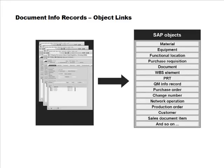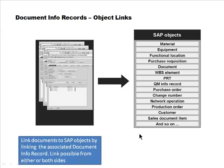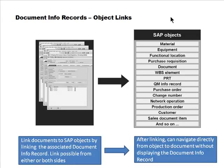You can link document info records to pretty much anything within SAP — any SAP object can be connected to a document info record. Once you have linked them, you can navigate without actually having to view the document info record. The linkage is bidirectional: from a document you can navigate to all SAP objects it is linked to, and from an object you can go directly to the document.